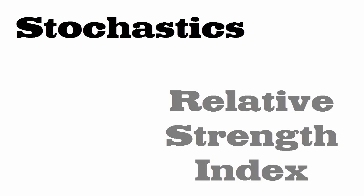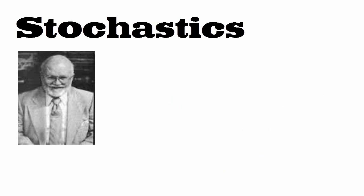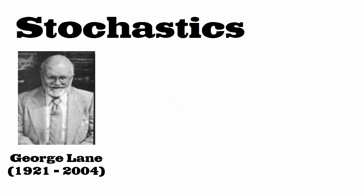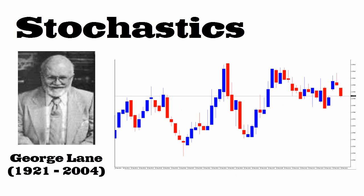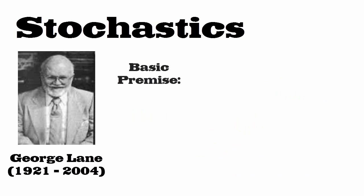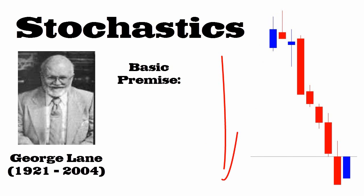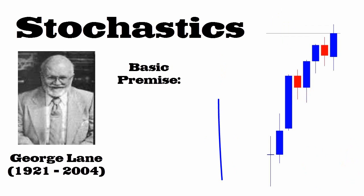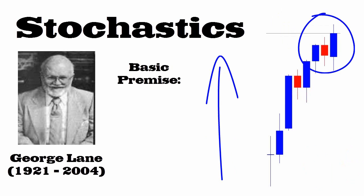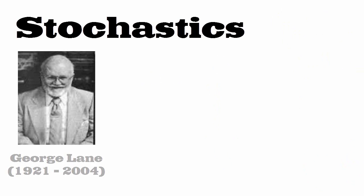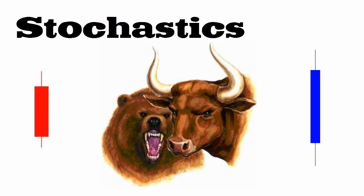Today we'll be getting into the stochastic and the relative strength index. For now we'll focus on the stochastics, developed by George Lane. This indicator measures the relationship between the closing price of an issue — that's the currency pair, commodity or index — and its price range over a predetermined period of time. Lane's basic premise is that daily closes tend to accumulate near the extreme lows, and periods of price increases tend to show closes accumulating near the extreme highs of the day. The stochastic identifies the precise moment at which bulls or bears are becoming stronger or weaker.